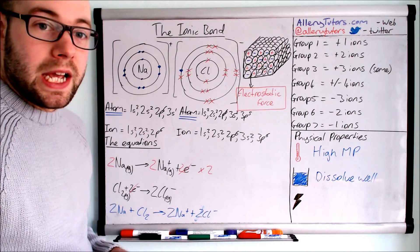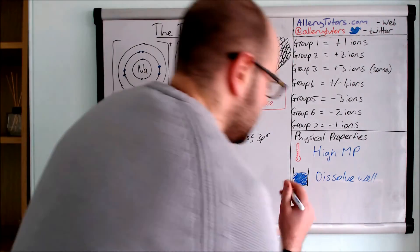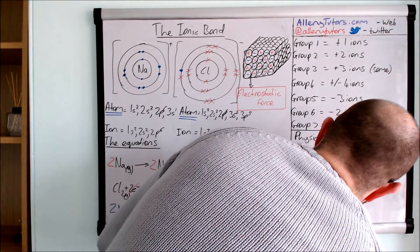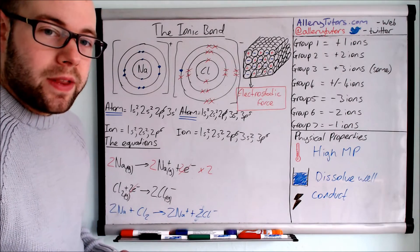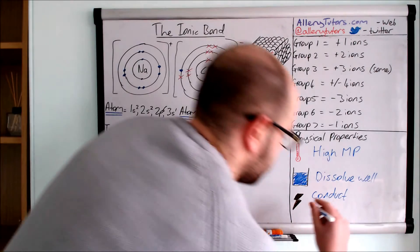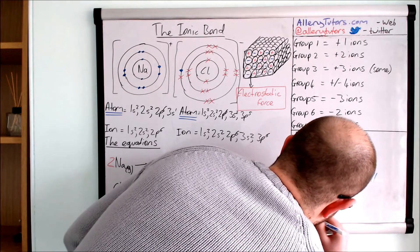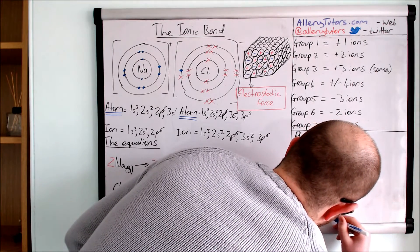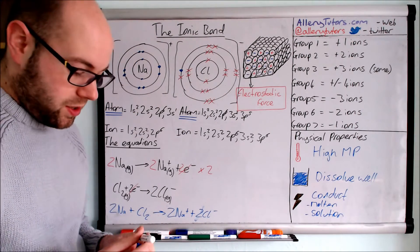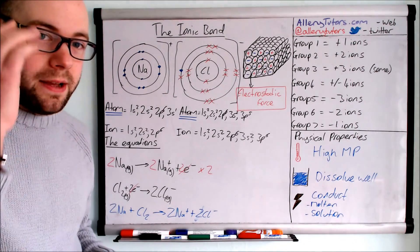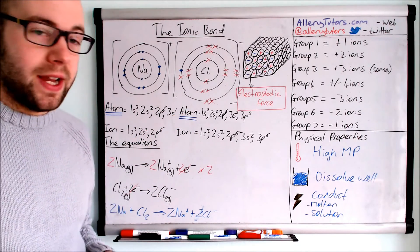And the last thing is conductivity of electricity. Ionic compounds do conduct electricity, but only under certain circumstances. They conduct when they're molten or when they're in solution.